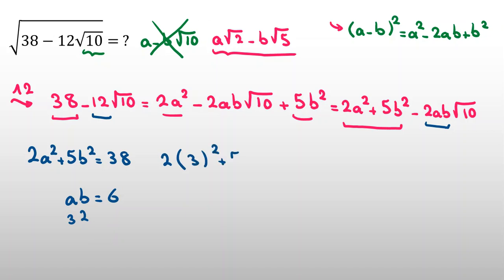2 times 3 squared plus 5 times 2 squared: 3 squared is 9, 5 times 2 squared is 4. 2 times 9 is 18. 5 times 4 is 20. 20 plus 18 equal to 38. So, it is correct.